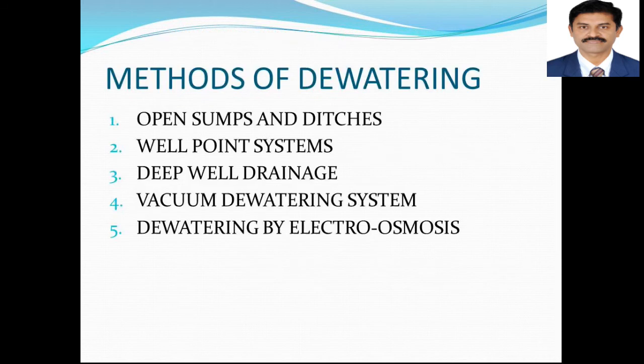There are different methods for dewatering. In general there are five methods. First one is open sump and ditches. Second one is well point systems. Third is deep well drainage. Fourth is vacuum dewatering system. Fifth is dewatering by electro-osmosis method. We will see one by one how these methods are done.